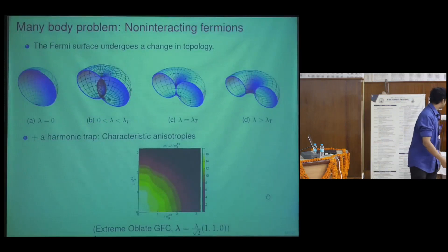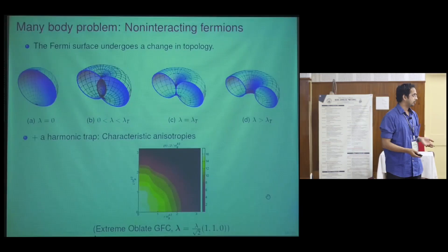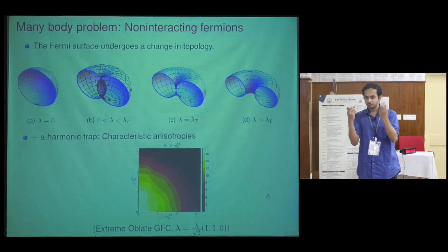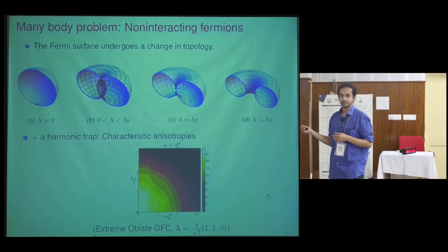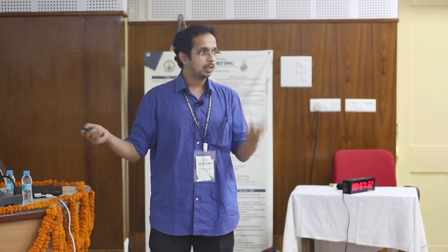We now venture into many-body physics. Even the initial signs are very auspicious. Even for a non-interacting system, as a function of lambda (the gauge coupling), the topology of the Fermi surface actually changes from that of a sphere to the top of a torus. We also work out what happens in the presence of a quadratic trap, finding characteristic features in the cloud shape that experimentalists could directly observe to confirm they have generated this kind of gauge field.